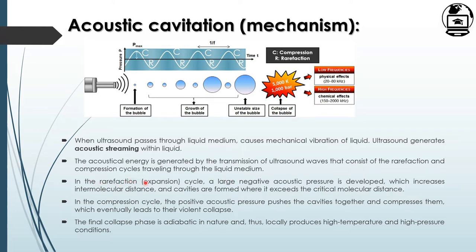In the rarefaction or expansion cycle, large negative acoustic pressure develops, increasing intermolecular distances. When this exceeds the critical molecular distance level, cavities form. In the compression cycle, positive acoustic pressure is generated, which pushes the cavities together and compresses them, eventually leading to their violent collapse.